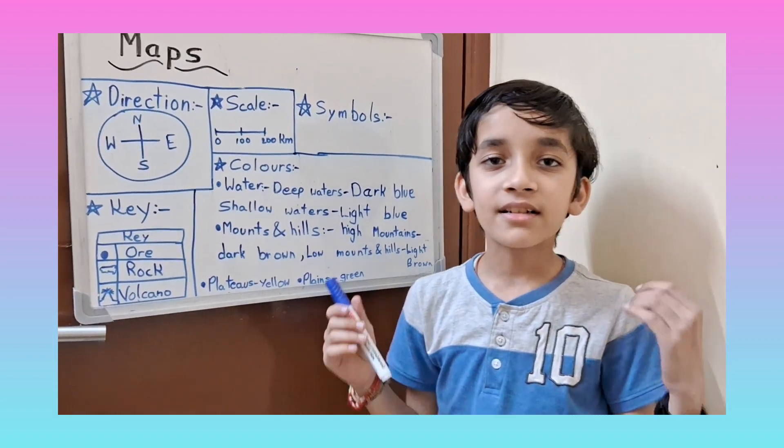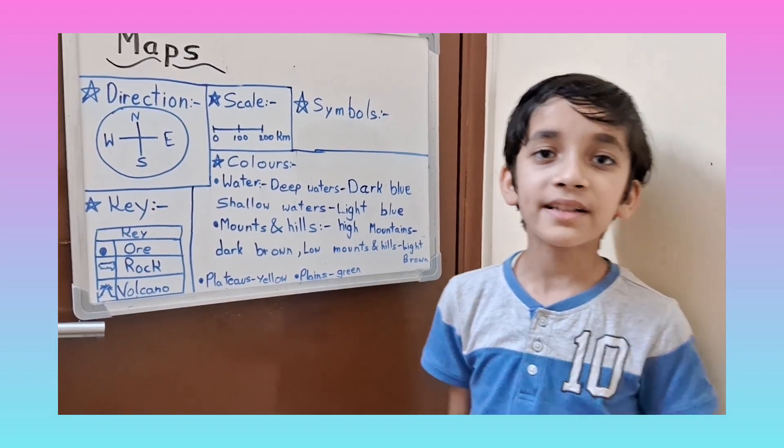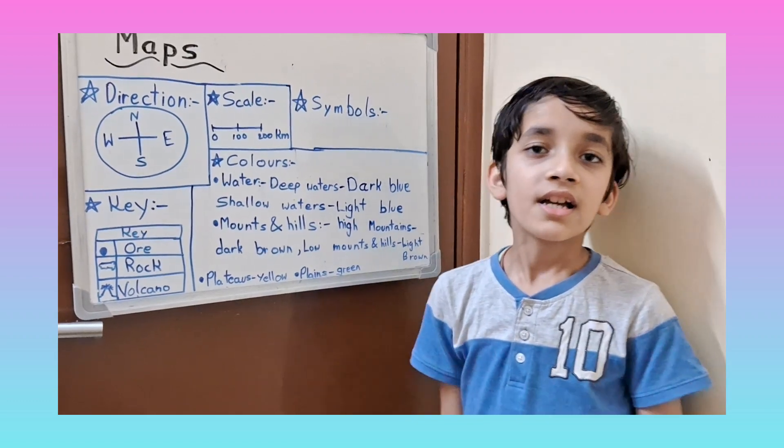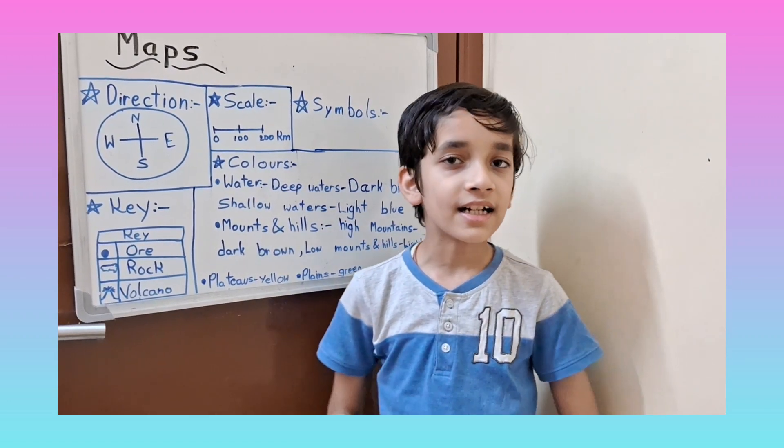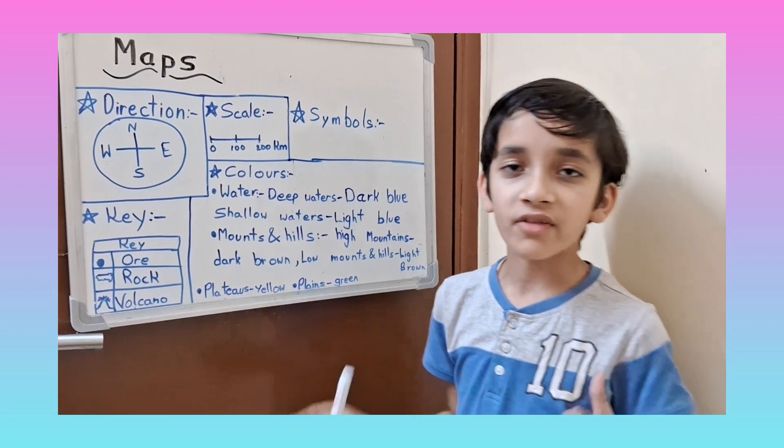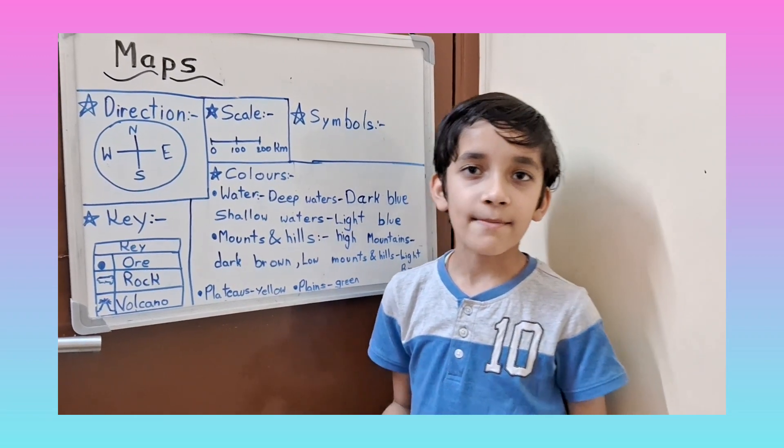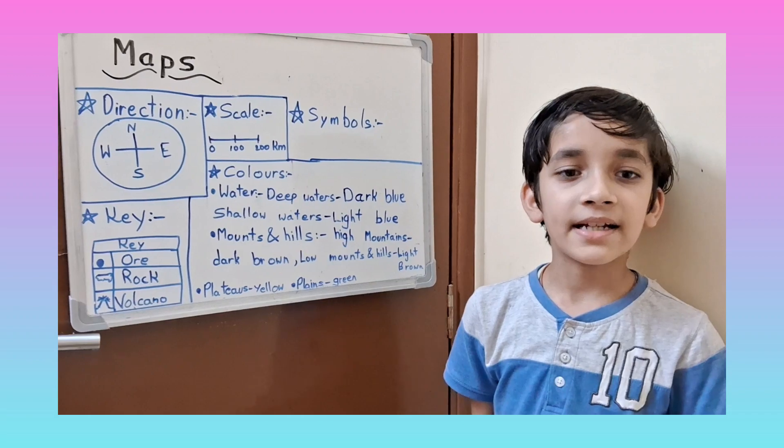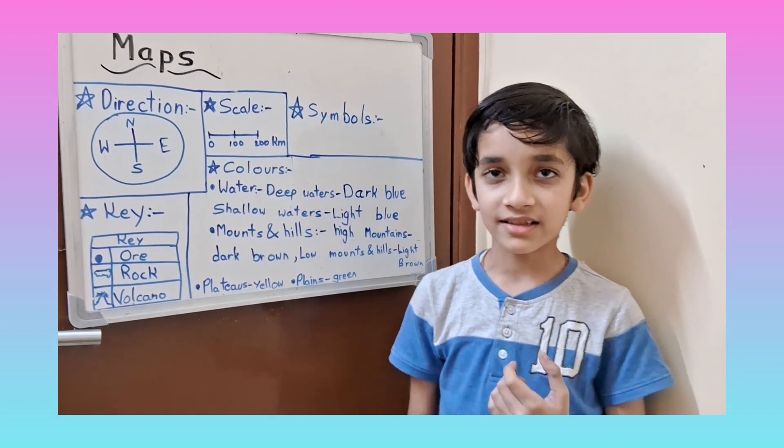Maps are the flat pictorial representation of the world. They can be of different areas like the map of a city, map of a nation, and map of the world, and it can be on an even smaller scale.